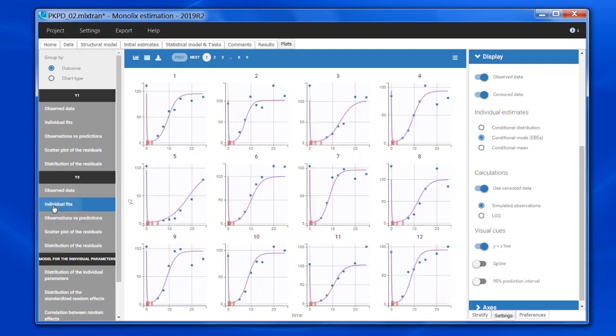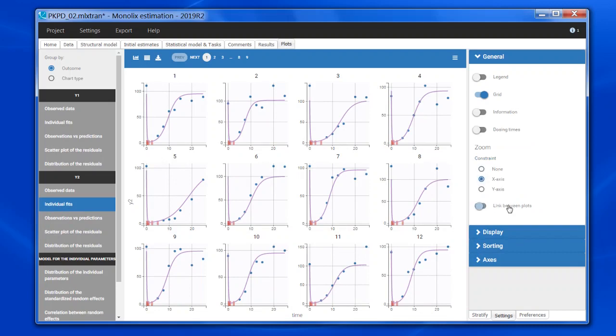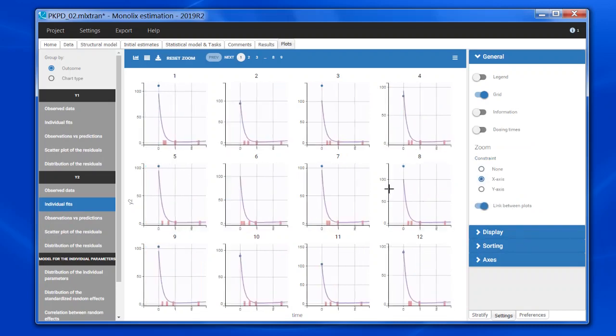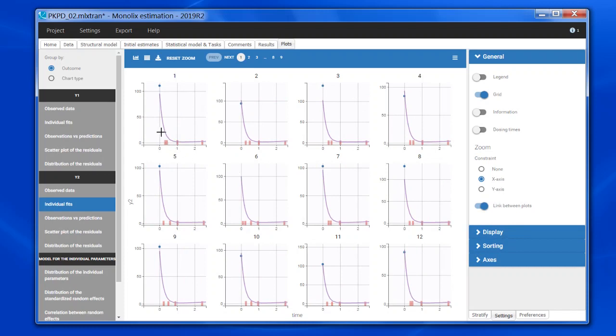So I can go back to the individual fits and zoom on the x-axis on the small times. And here indeed I see that the prediction for the small times is always above the censored interval. So my model is not able to decrease fast enough compared to what I observed in the data. So this example shows how the simulated BLQ helped to diagnose the model, and that in this example the misspecification would not have been identified in the obs versus pred plot without the simulated BLQ.